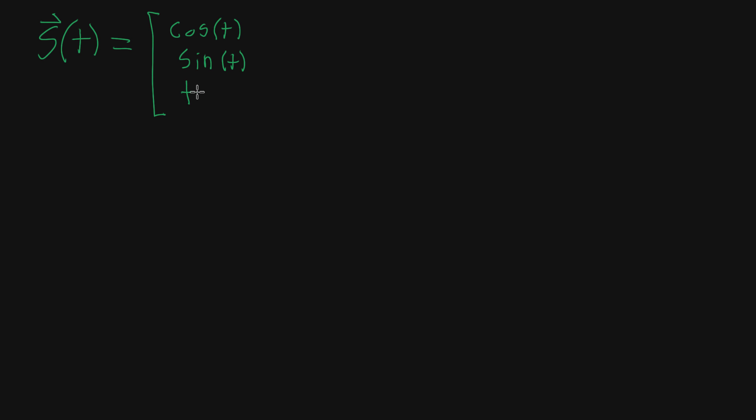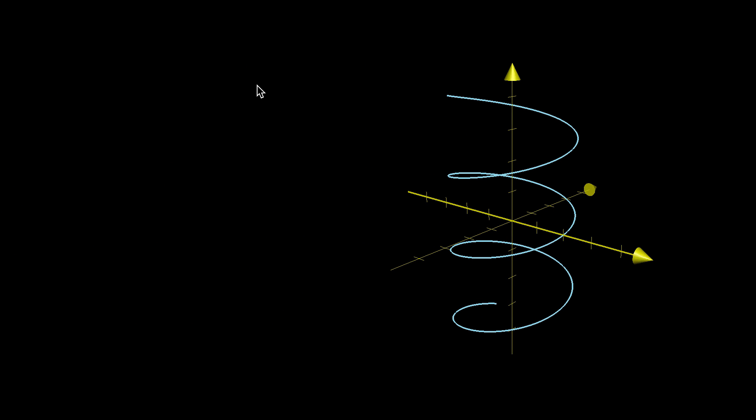But this is three-dimensional, and what makes it different from a circle is the last component: t divided by 5. We can visualize what this looks like with the graph here.